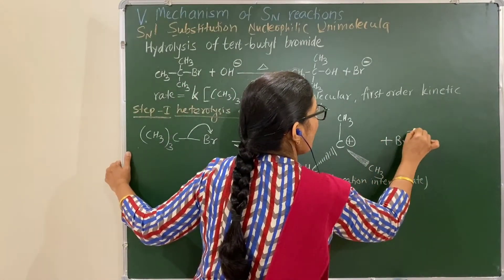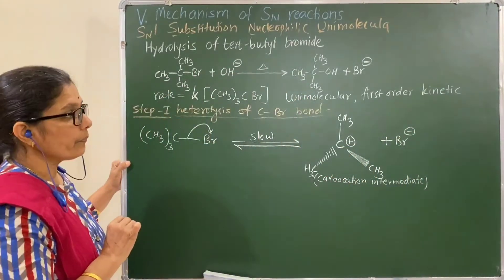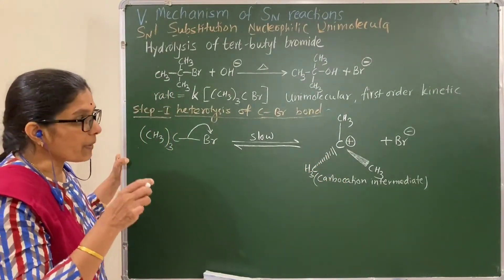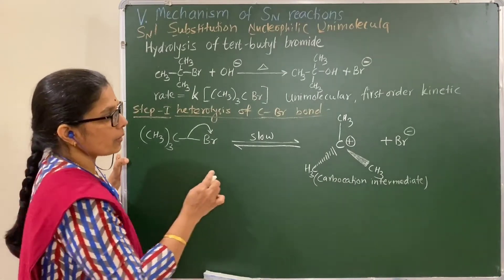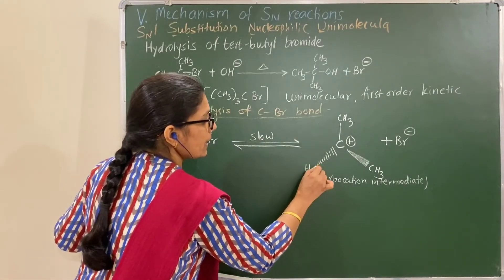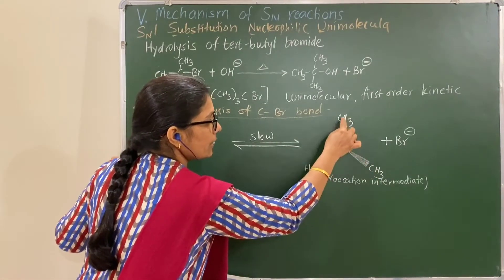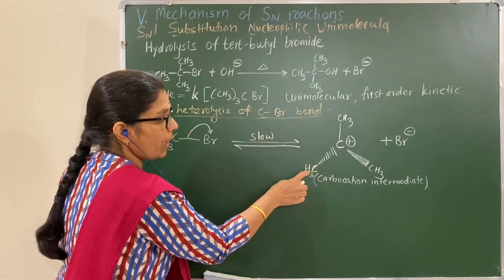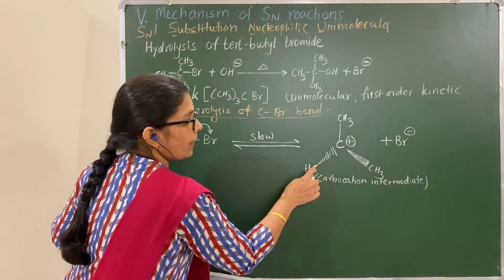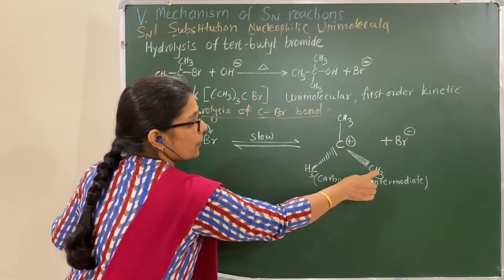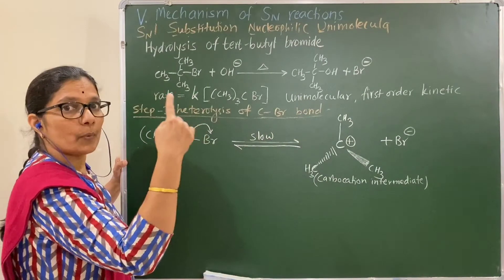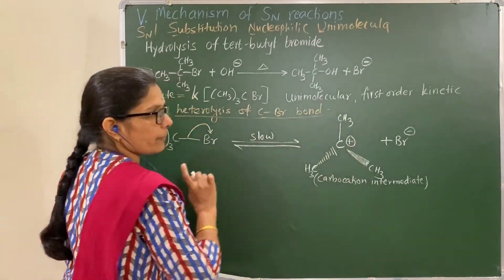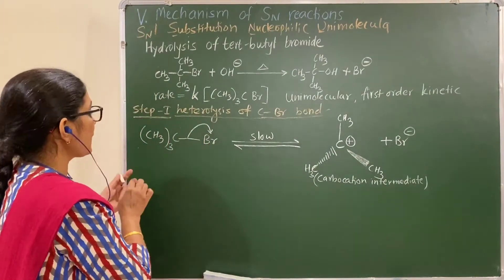This carbocation is stabilized by the inductive effect of three CH₃ groups, which are electron-donating. There are also three alpha carbon atoms with nine alpha hydrogen atoms, so hyperconjugation further stabilizes this carbocation by inductive effect and hyperconjugation.